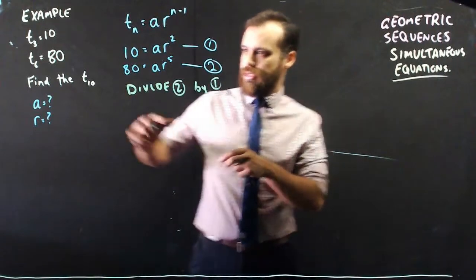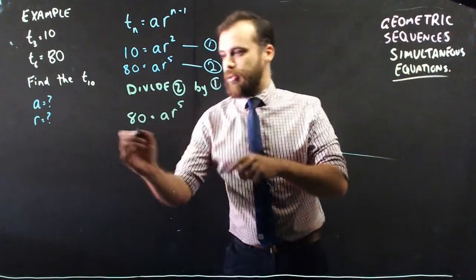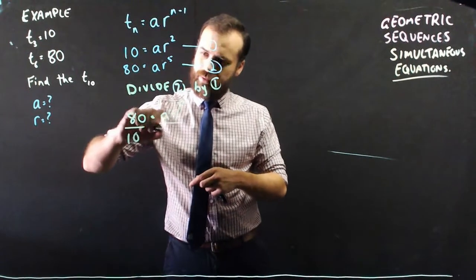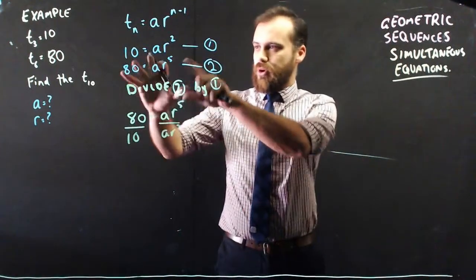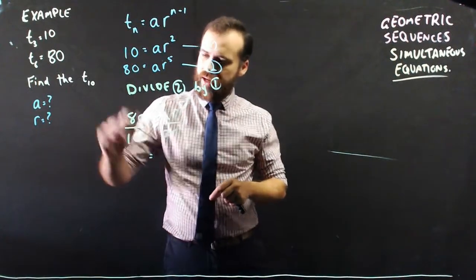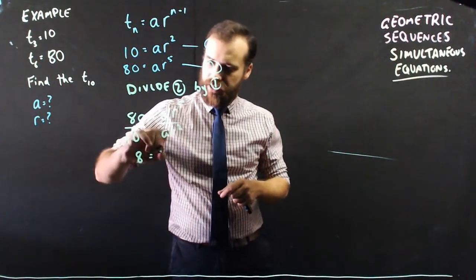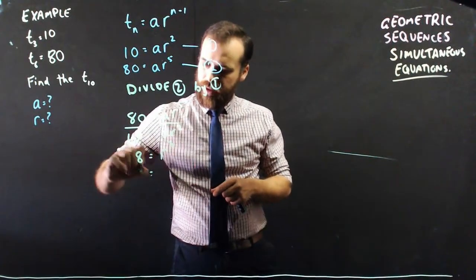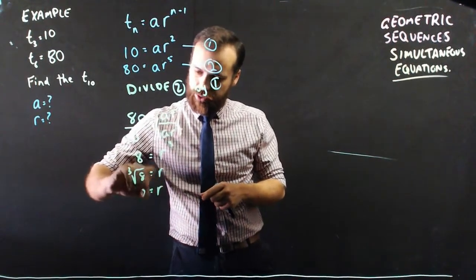What that ends up looking like is equation 2, 80 equals ar^5 divided by equation 1, ar^2. You need to be really careful with this. It only really works with this kind of format. 80 divided by 10 is just plain old 8, a divided by a, the a's will cancel each other out. r^5 divided by r^2 will be r^3. And then we end up with cube root 8. So r is equal to 2.